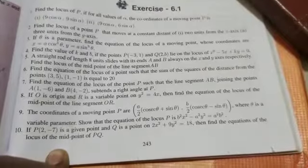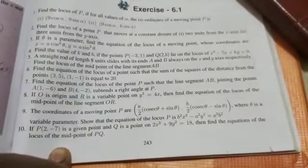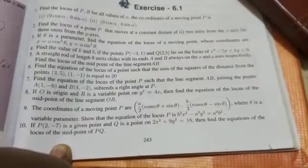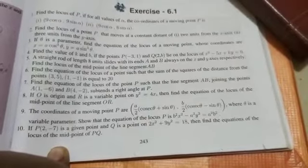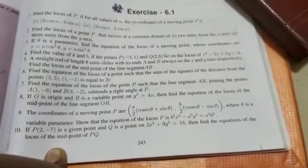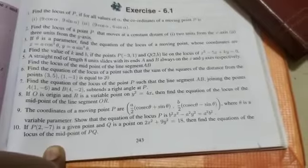Exercise 6.1, sum number 2. Find the locus of a point P that moves at a constant distance of first, 2 units from the x-axis, and second, 3 units from the y-axis.